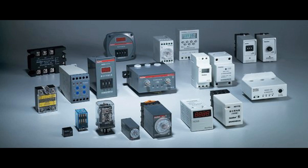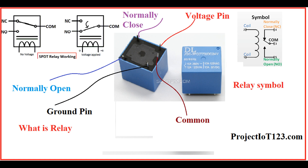Control Signal Application: When the control signal is applied to the relay, instead of an immediate response, the relay enters the delay period. The contacts will only change their state after the specified delay time has elapsed. Control Signal Removal: In relays with delay on release, when the control signal is removed, the relay enters a delay period before the contacts return to their original state. This delay can be crucial in preventing rapid and undesired state changes.